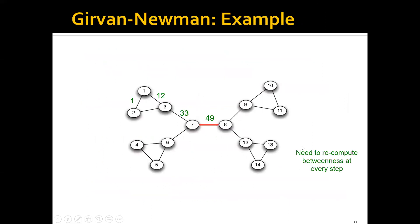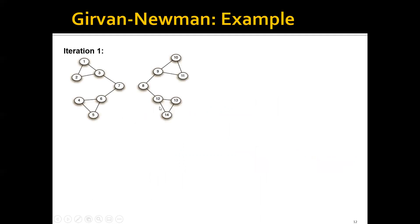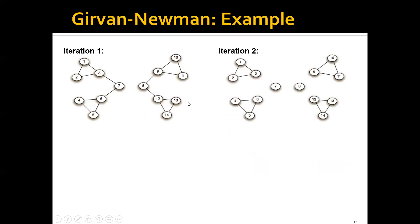For example, in the previous small graph, if we run the Girvan-Newman algorithm, in the first iteration we compute the betweenness of each edge in the graph. This edge has the highest betweenness, so we remove it and cut the graph into two communities.